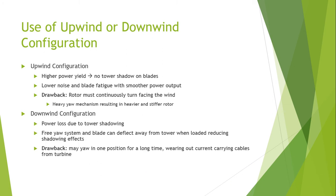The next configuration is the downwind configuration. Power loss due to tower shadowing is more prominent. However, the free yaw system and blades can deflect away from the tower when loaded, reducing the shadowing effect — this is an advantage of the downwind configuration. A drawback is that yawing in one position for a long time, driven by a certain wind direction producing a downward force, is capable of degrading the bearing that accounts for that motion.